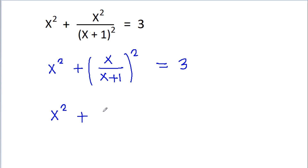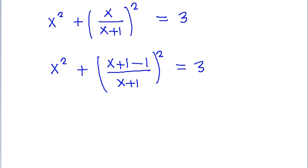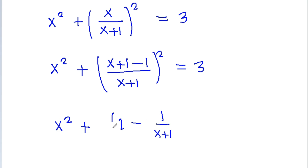So we can write x as x plus 1 minus 1 by x plus 1 whole square is equal to 3. Now we can get x squared plus x plus 1 by x plus 1 minus 1 will be 1 minus 1 by x plus 1 whole square is equal to 3.